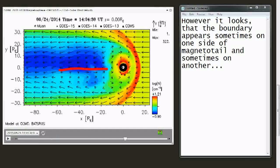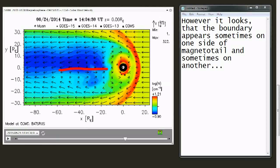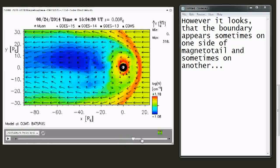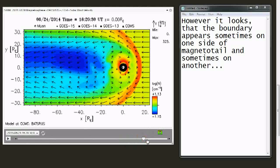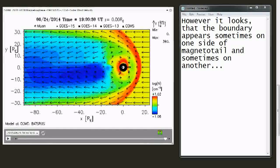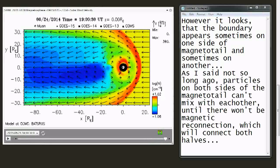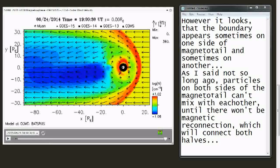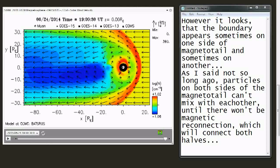However, it looks that the boundary appears sometimes on one side of magnetotail and sometimes on another. As I said not so long ago, particles on both sides of the magnetotail can't mix with each other until there won't be a magnetic reconnection which will connect both halves.